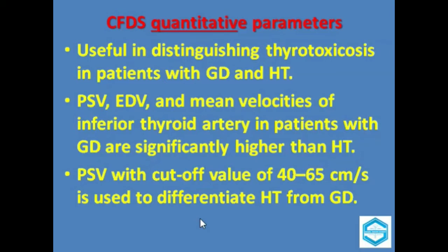Peak systolic velocity and diastolic velocity and mean velocities of the inferior thyroid artery in patients with Graves' disease are significantly higher than in Hashimoto's thyroiditis. Peak systolic velocity with cutoff values of 40 to 65 centimeters per second is used to differentiate Hashimoto's thyroiditis from Graves' disease.